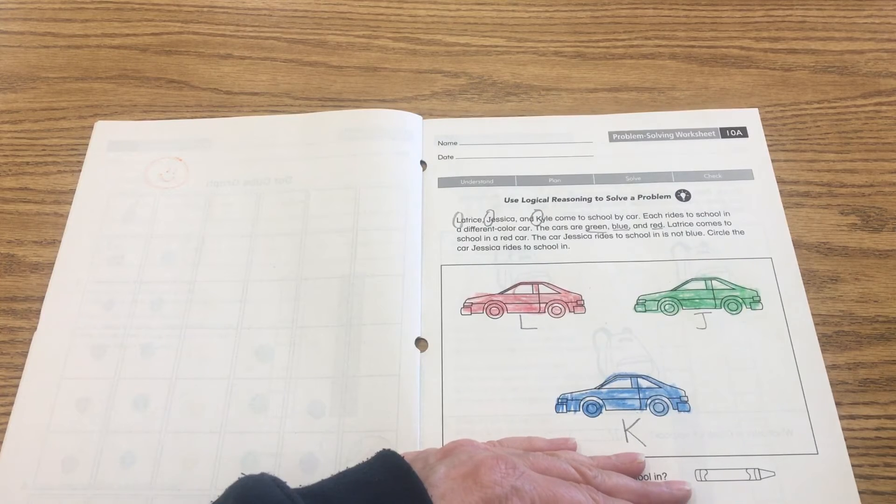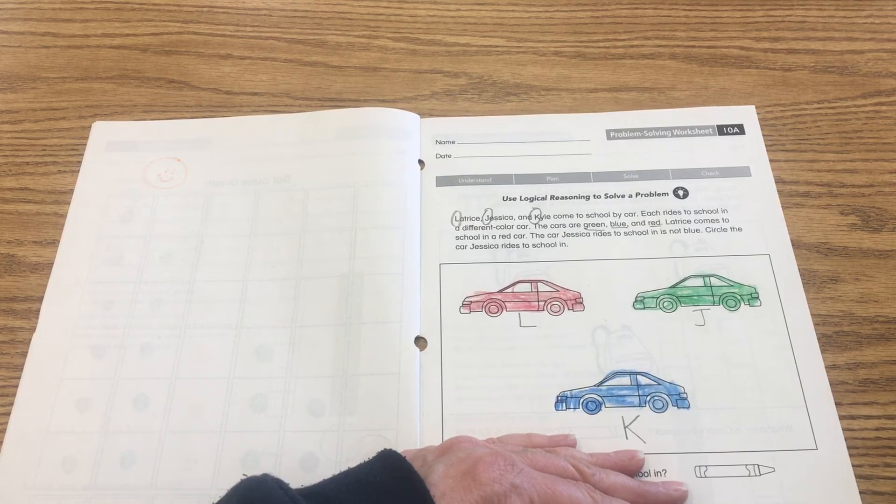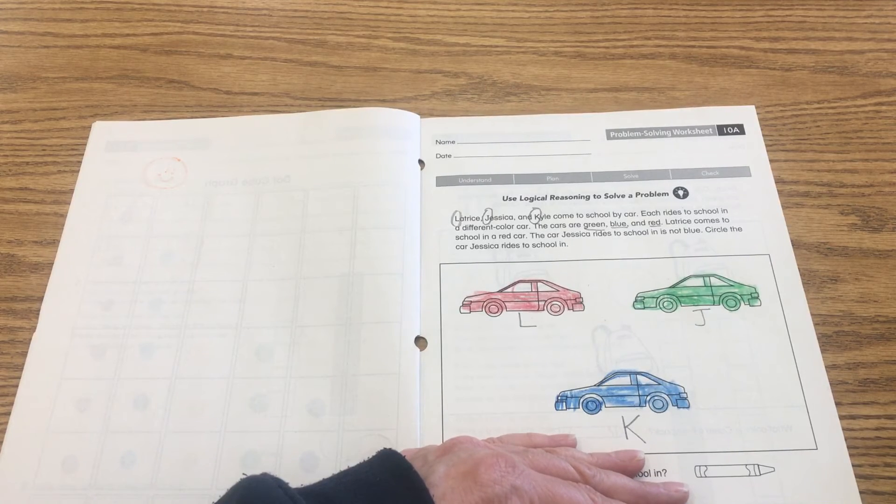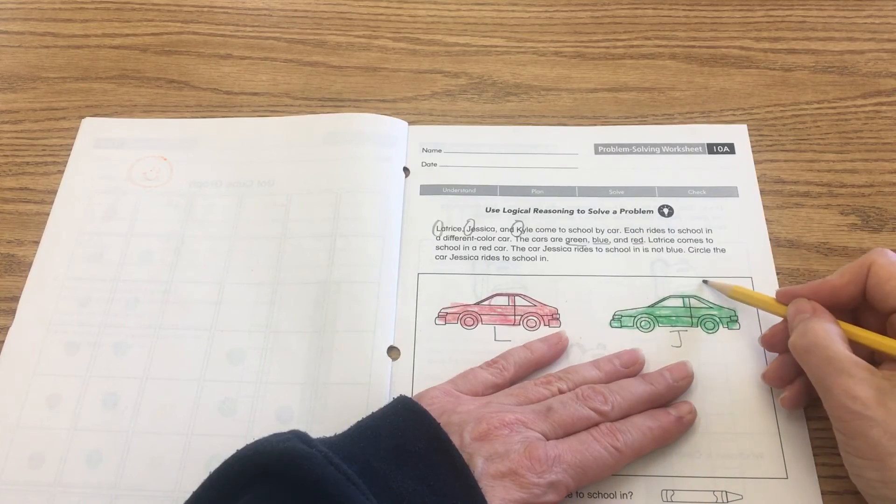Now remember, if I'm going a little bit too fast, go ahead and pause the video, just pause it and then press play when you're ready to rejoin us, because we're not quite done yet. It says circle the car that Jessica rides in. We know that Jessica comes to school in the green car, so we're going to circle that right there.